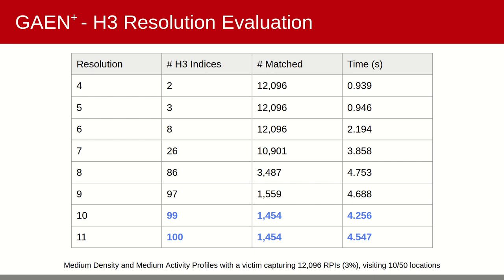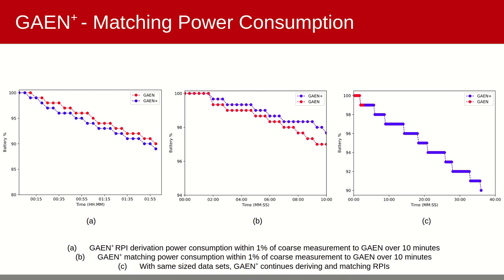We then evaluated GAEN Plus for power consumption. On the left, evaluating RPI derivation and updating location every 60 seconds for two hours, the difference is roughly 1%. In the middle, throughout 10 minutes of RPI matching, GAEN Plus is again within 1% of GAEN and actually performs better, likely due to the original GAEN making more JNI calls. On the right, for an equal size set of TEKs, GAEN Plus continues matching as expected, requiring approximately 9% more battery.